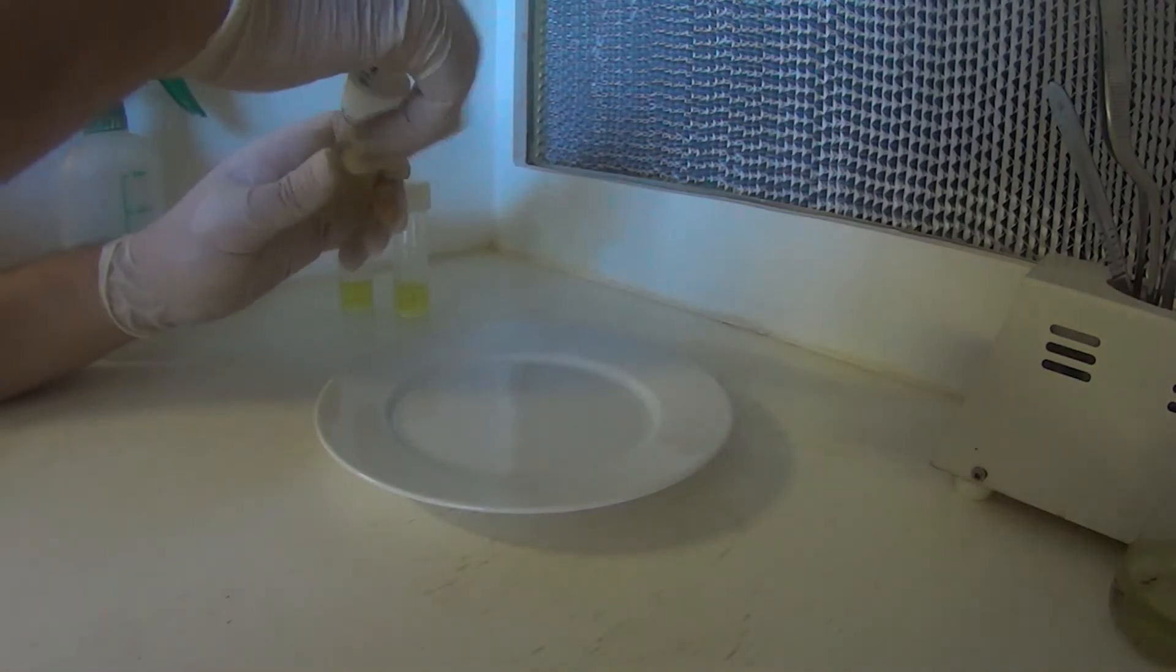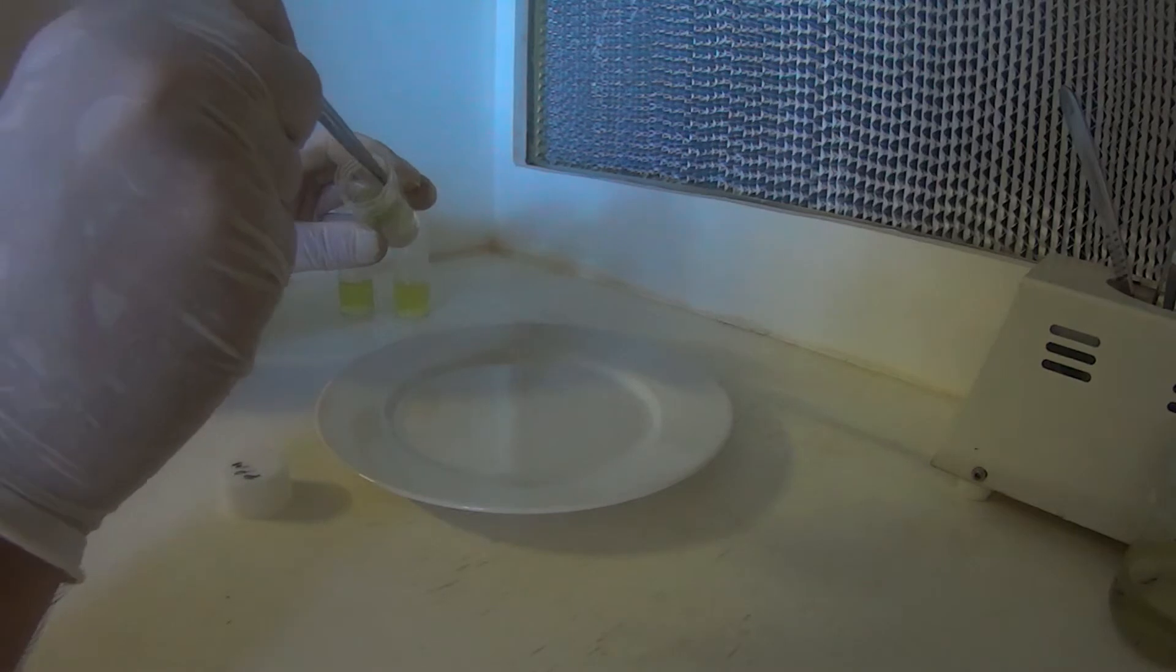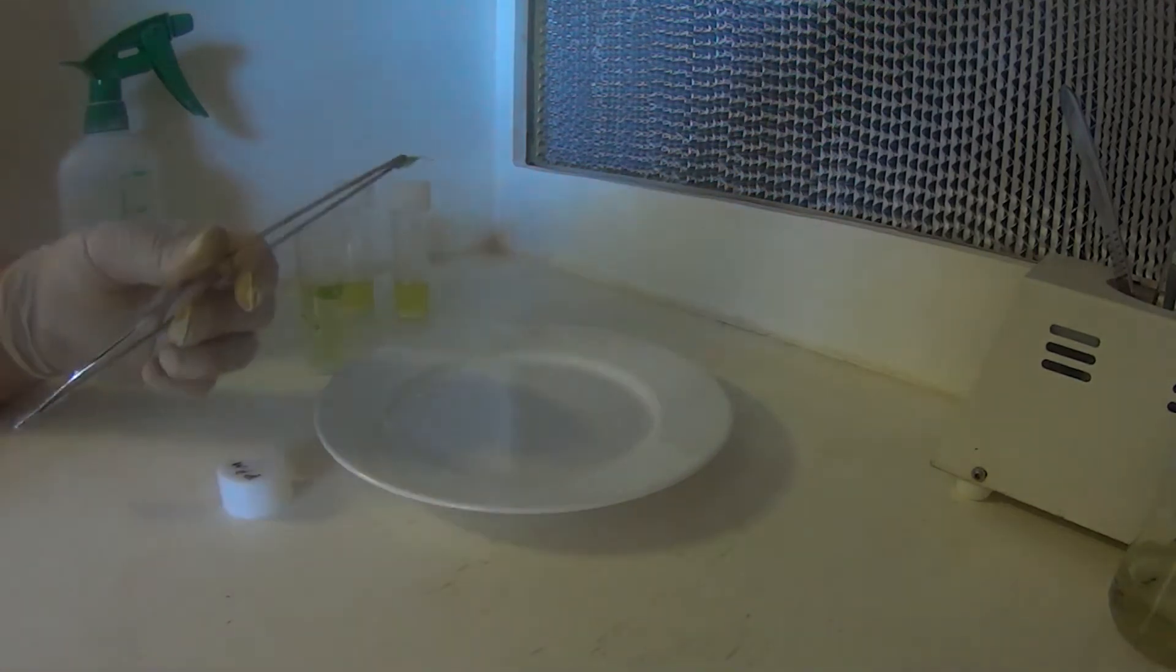So what we'll do, what we did previously, this is the plant preservative mixture in here. 2 mils per 50 mils of MS solution. So what we're going to do is remove one little bit of plant.